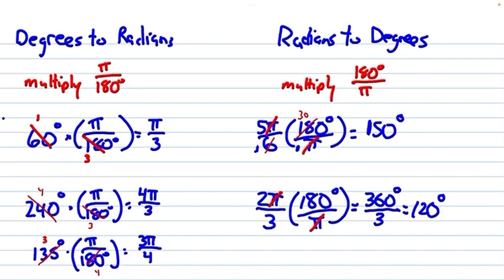I'm learning how to be comfortable going from radians to degrees and degrees to radians. Like we said, because there are two different units of measurement for angles.